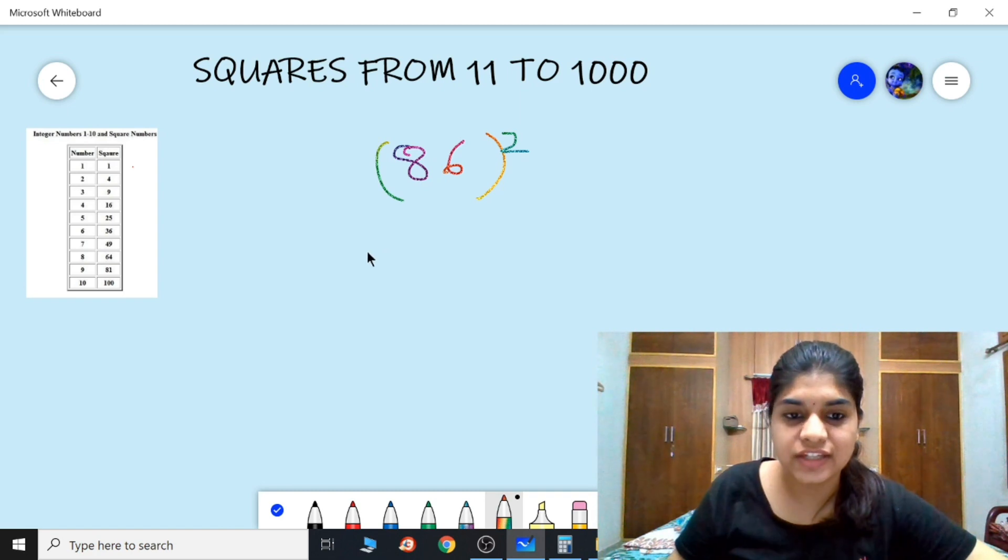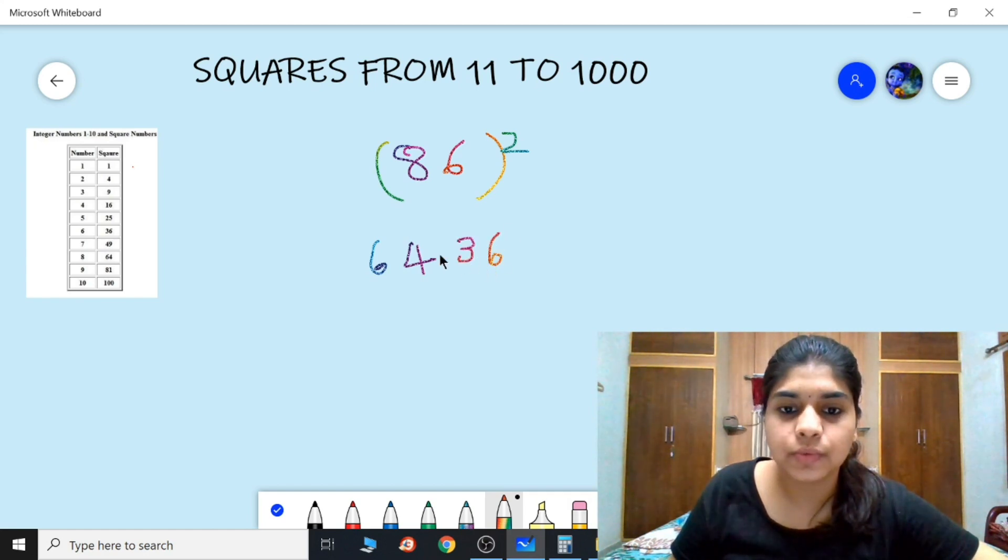So you need the square of 86. We know the square of 8 is 64 and the square of 6 is 36.